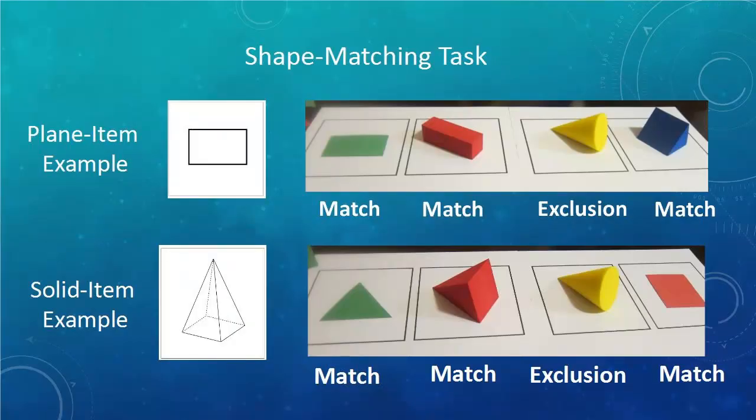For each item, there was one direct match to the diagram and one non-match, as well as two challenge matches. These matches required children to see and relate parts of the shapes. In every case, we asked the child about at least one match and one exclusion decision for each item, and we asked about all the errors that the children made.